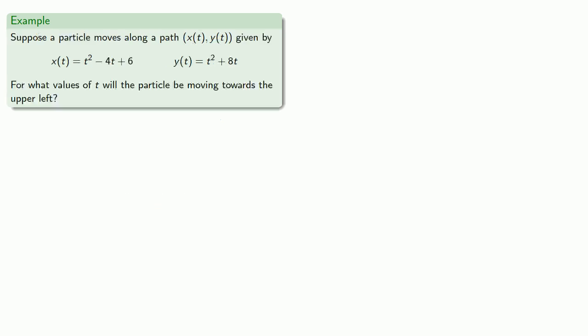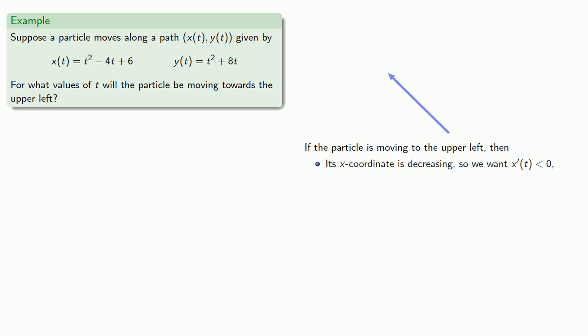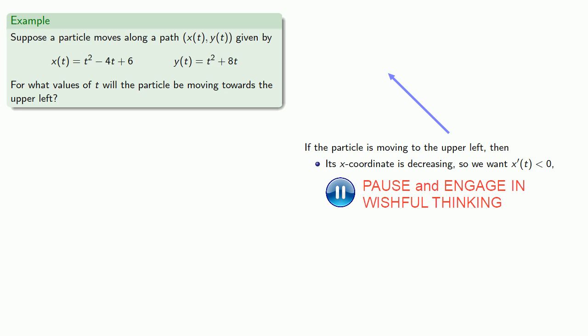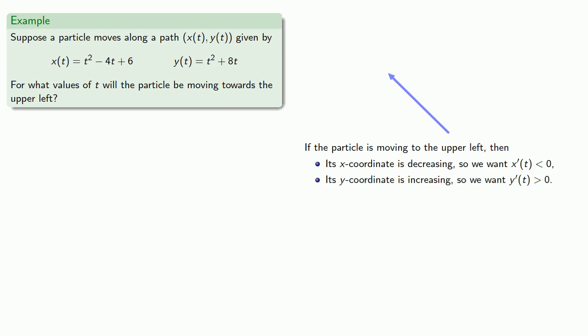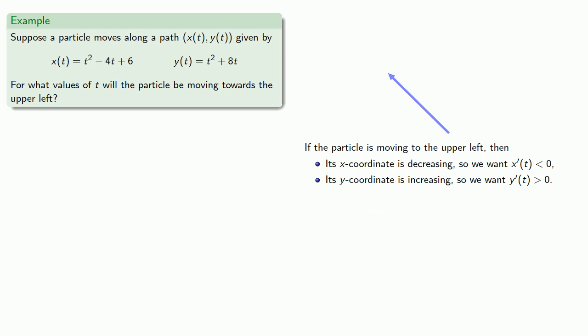Now we can describe more complicated curves. Suppose a particle moves along some path given by these parametric equations, and maybe we want to know for what values of t will the particle be moving towards the upper left. If the particle is moving to the upper left, its x-coordinate is actually going to be decreasing, so we want x prime to be negative. Its y-coordinate, on the other hand, will be increasing, and so we want y prime to be positive.